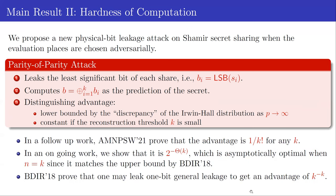We prove that the advantage is constant if the reconstruction threshold k is small. In a follow-up work, it was proven that the advantage is at least 1/(k factorial) for any reconstruction threshold k. Also in ongoing work, we show that it is in fact exponentially small in k, which is asymptotically optimal when the number of parties equals the reconstruction threshold, as it matches the upper bound in the BDI paper.